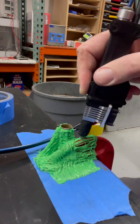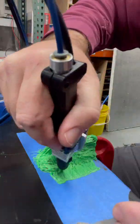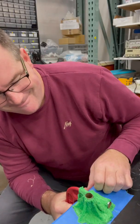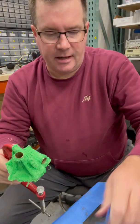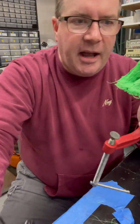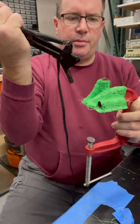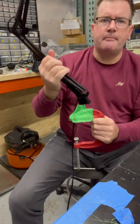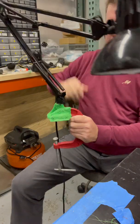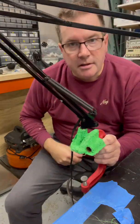It's ugly, but it doesn't matter. All it has to do is hold this tube. Take it off the blue tape. I now have a very usable mount for this lamp. Totally sturdy, enough to do the job.